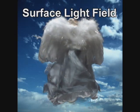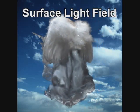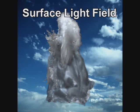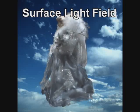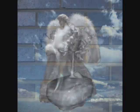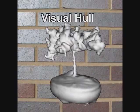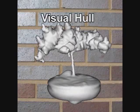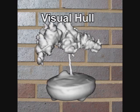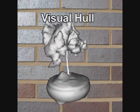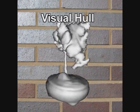The view-dependent radiance at each surface point is called a surface light field. Here is another object that is difficult to scan with traditional methods: a small bonsai tree.